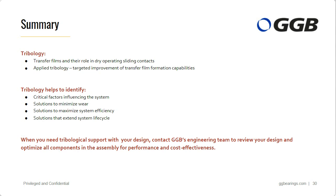The next question: what is the composition of a transfer film? This question is quite complex. Transfer films mainly consist of the material that slides against the particular counter surface. However, the transfer film composition can vary over time — for example, a film formed by a material with a multi-layer architecture can alter throughout the sliding process. We also know that the transferred material can undergo chemical reactions which lead to new chemical species in the transfer film.